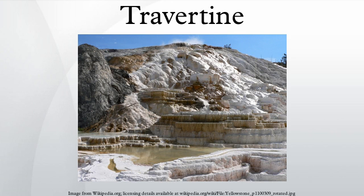Some springs have temperatures high enough to exclude macrophytes and bryophytes from the deposits. As a consequence, deposits are in general less porous than tufa. Thermophilic microbes are important in these environments and stromatolytic fabrics are common. When deposits are devoid of any biological component, they are often referred to as calcareous sinter.